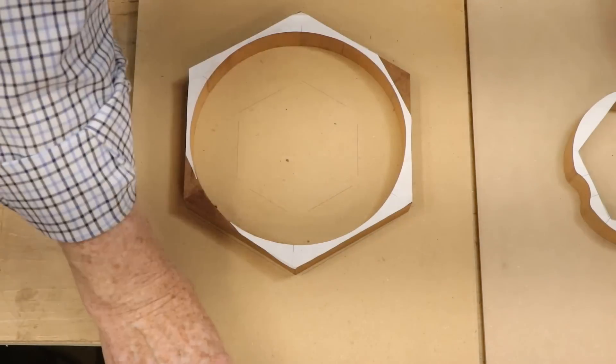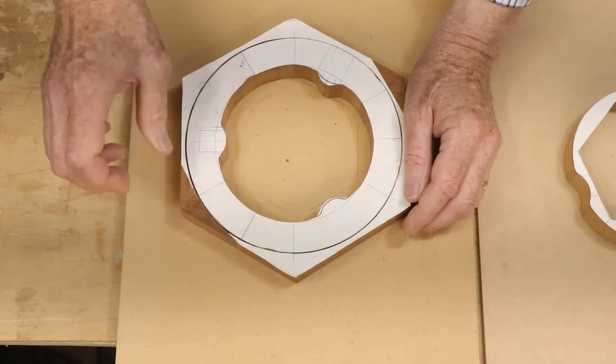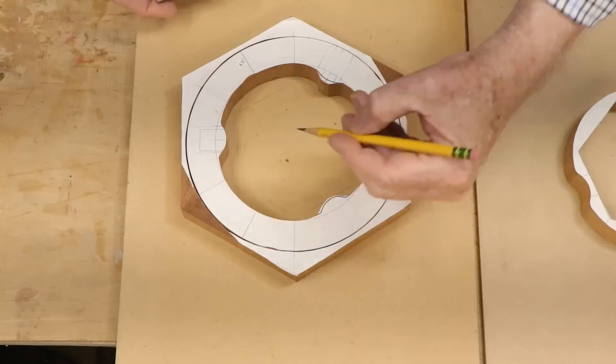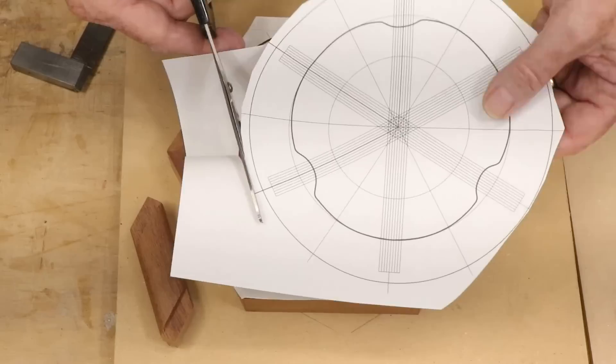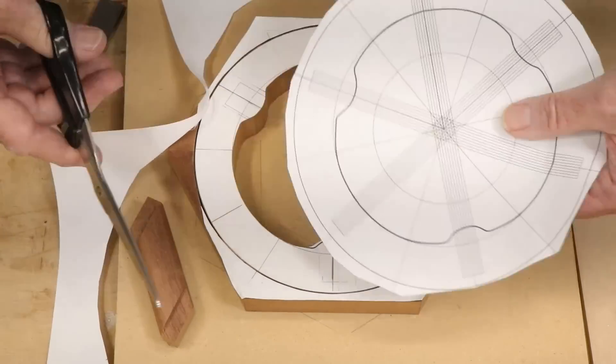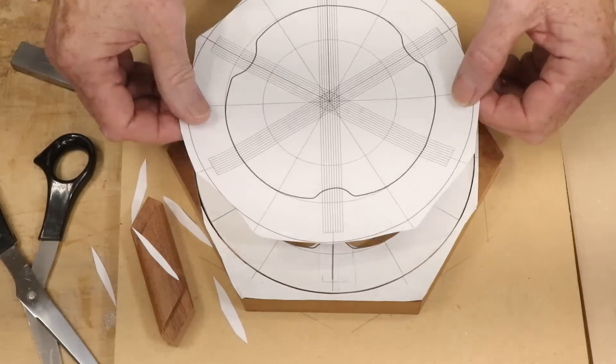The mortises for the tenons in both the wheel and the hub have to be very accurately aligned. So I printed an alignment template. I put the wheel back into the hexagon from which it had been cut to help paste the alignment guide on correctly. I printed a second copy for setting the alignment of the mortises in the hub.